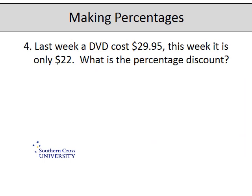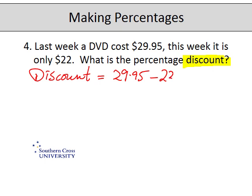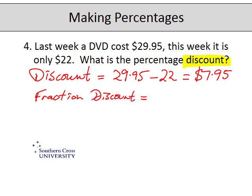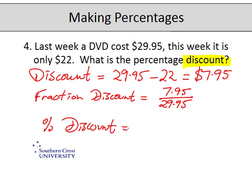The last question: last week a DVD cost $29.95, this week it's only $22. What is the percentage discount? The key word is discount, so the discount must have been 29.95 subtract 22, which is 7.95. The fraction relative to the original price is 7.95 out of 29.95. So the percentage discount is 7.95 divided by 29.95 times by 100, which comes out to 26.54 percent.